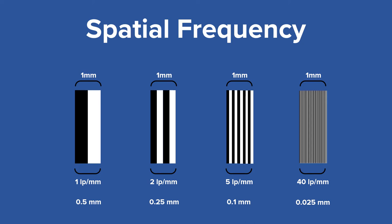At two line pairs per millimeter, you can distinguish an object that is 0.25 millimeters in length. Humans normally can see about five line pairs per millimeter, or objects that are as small as 0.1 millimeter in length.